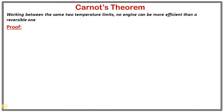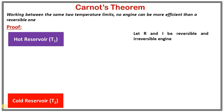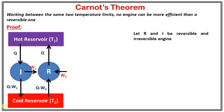In order to prove it, let R and I be the reversible and irreversible engines, operating between the same temperature limits. We have two reservoirs — hot and cold — having temperatures T1 and T2 respectively. The irreversible engine extracts Q amount of heat from the hot reservoir, delivers W1 amount of work, and rejects Q minus W1 amount of heat to the cold reservoir.